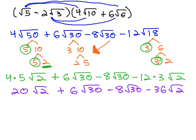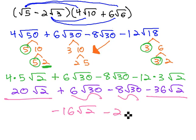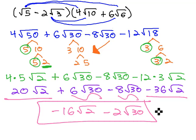And now to finish, we can go through and combine like terms. You'll notice the first and last terms have our root 2, giving us negative 16 root 2, and the middle terms are root 30's, giving us negative 2 root 30 for our final solution.